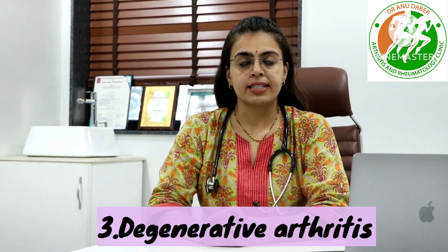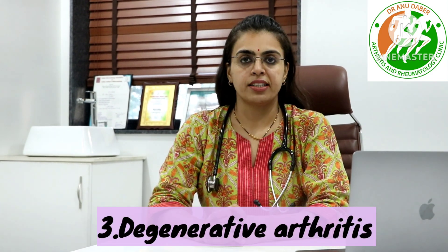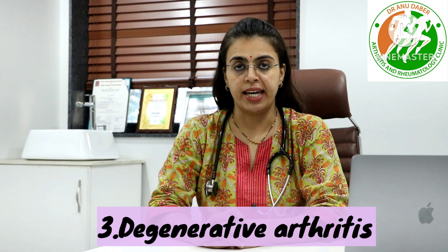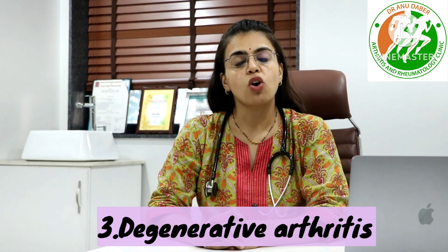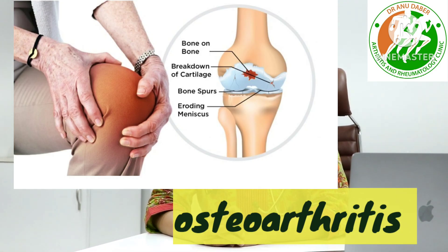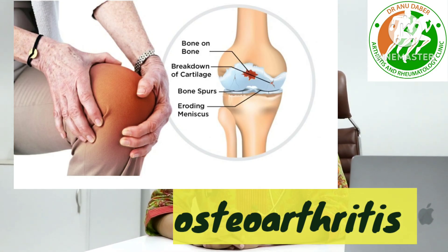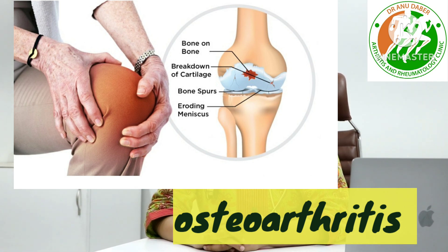The third type are degenerative arthritis — those which happen with age. The most common example is osteoarthritis, when elderly, obese individuals start complaining of knee pain, a sensation of locking in the knee, pain while climbing stairs, and being unable to sit squat-legged. All these are common symptoms of osteoarthritis.